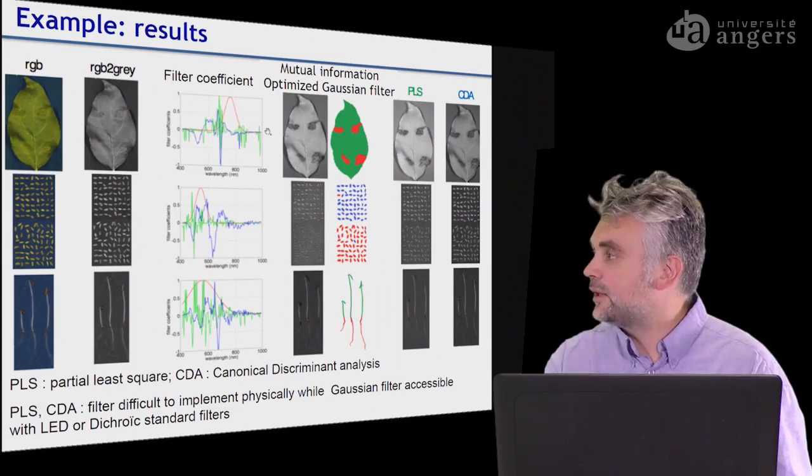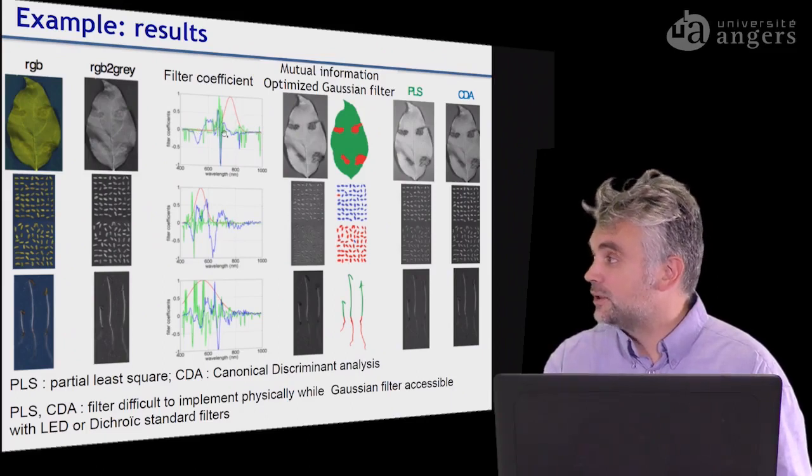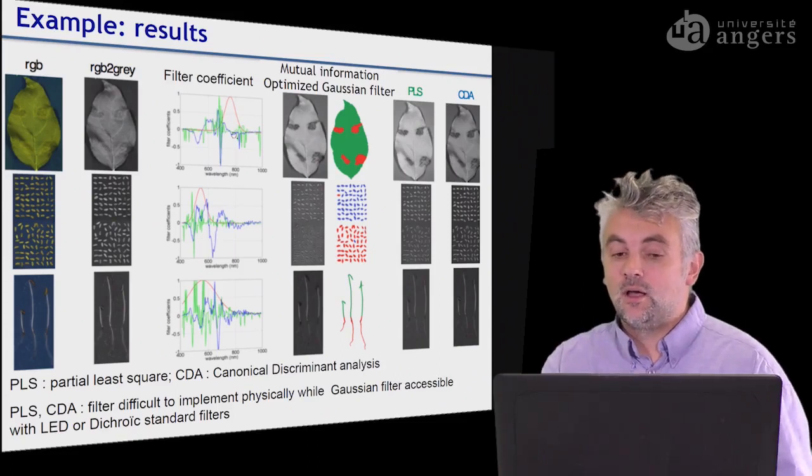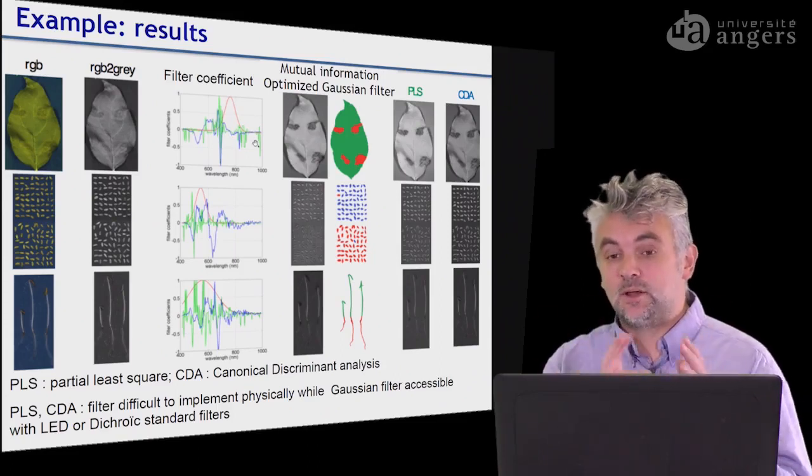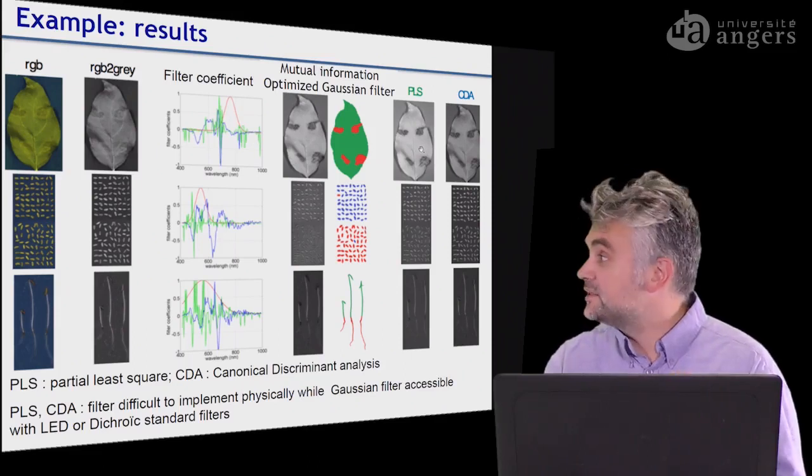while the usual standard approach in plant imaging would be to use a hyperspectral image and to make a combination given by the coefficients shown in green and blue of all these images acquired by the hyperspectral imaging system. And by this, you obtain this kind of images.